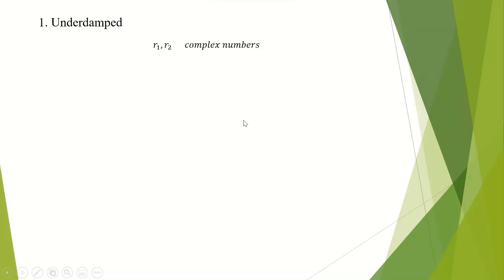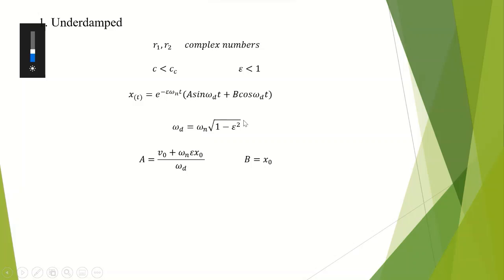Finally, for the underdamped system, the roots R1 and R2 are complex numbers and the damping ratio is less than one. The solution involves omega D, the damping frequency, given by the equation below. A equals the initial velocity plus omega n times the damping ratio times the initial displacement, all divided by the damping frequency. B is simply equal to the initial displacement. The displacement equation can also be simplified, where D and phi are calculated from the boundary conditions.